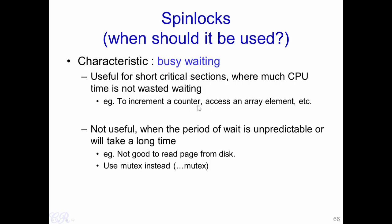Therefore, even if another process is accessing the counter, we are certain that the process is not going to spend too much time incrementing it. Therefore, the waiting process will not have to waste too many cycles waiting to enter into the critical section. However, spin locks are not useful when the period of waiting is unpredictable or it will take a very long time.